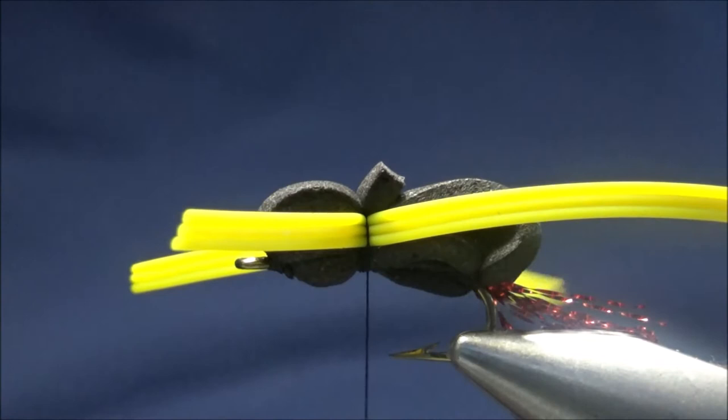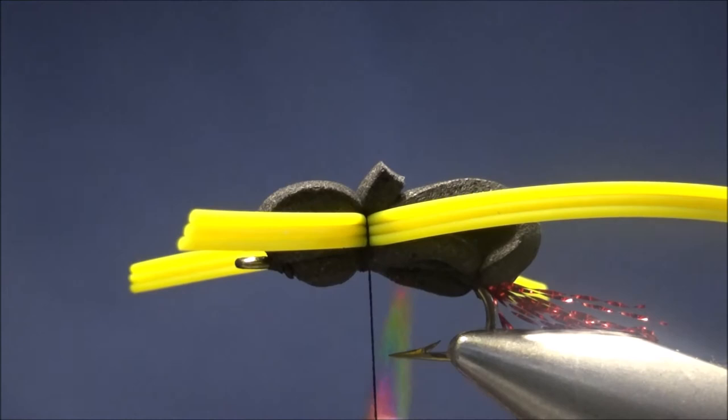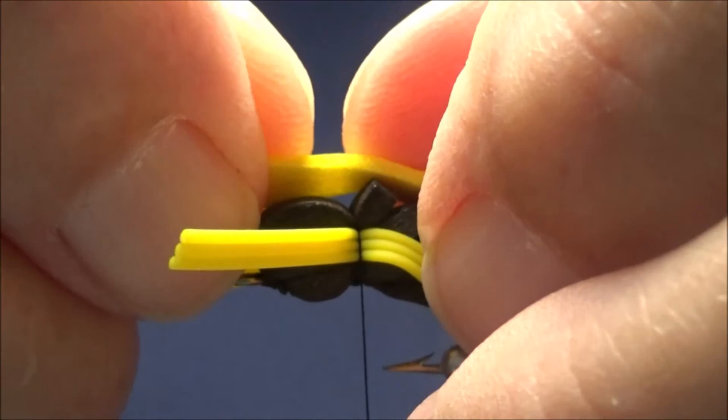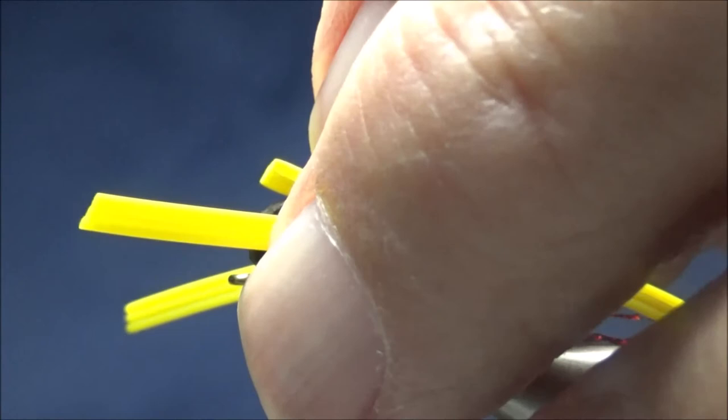At this point in time, you can go ahead and whip finish if you'd like. My eyes aren't as good as they used to be, so I'm going to put in a little indicator here, something I can see when this fly is in the water. As I said, it does ride low in the water column, so you do need a little help sometimes to see it if you don't have the best of eyesight.